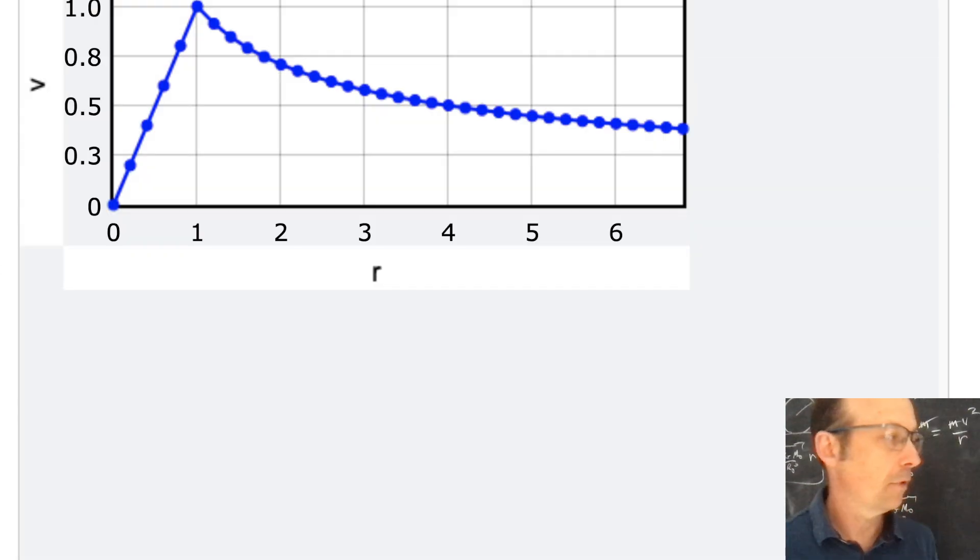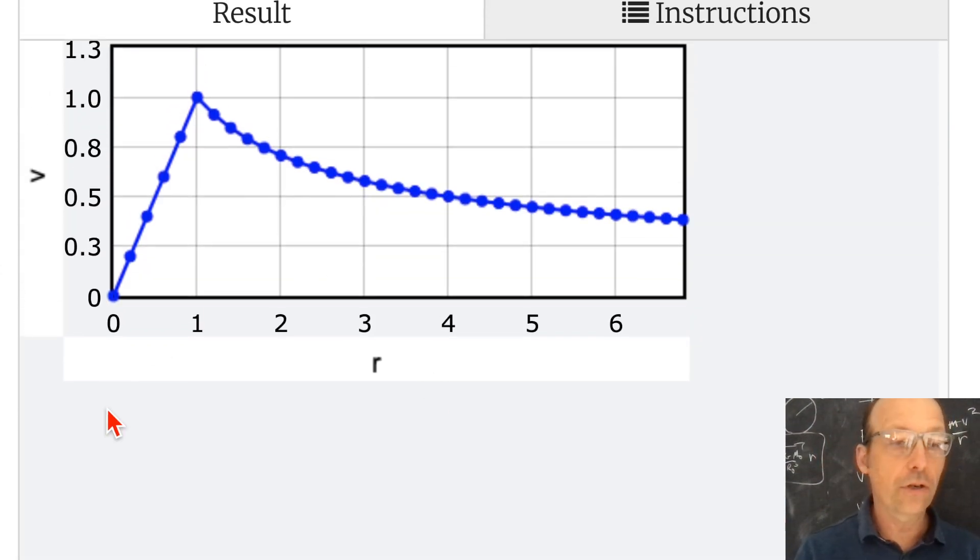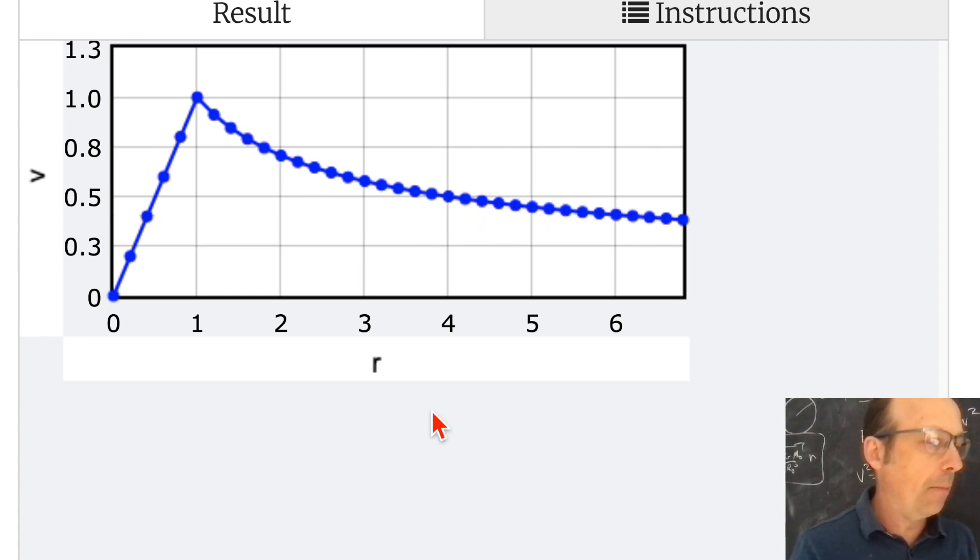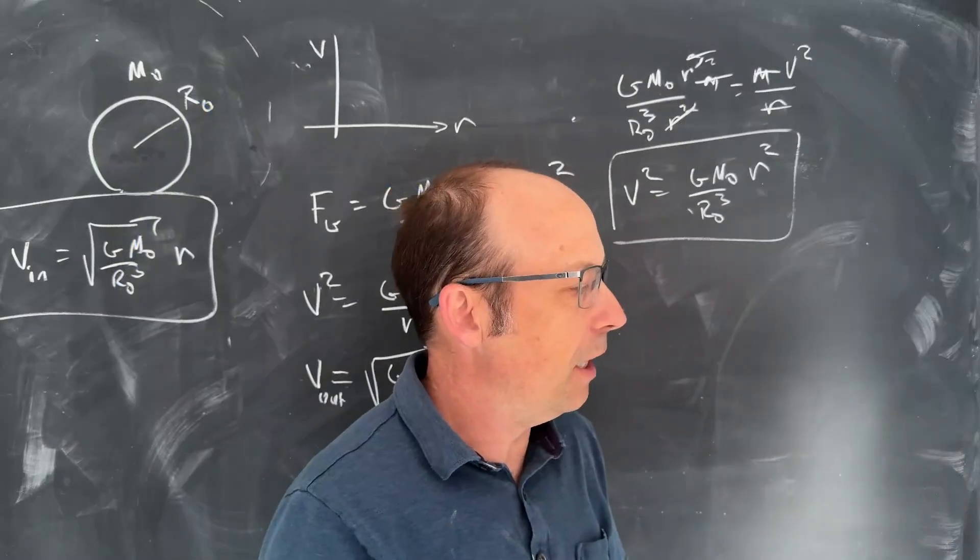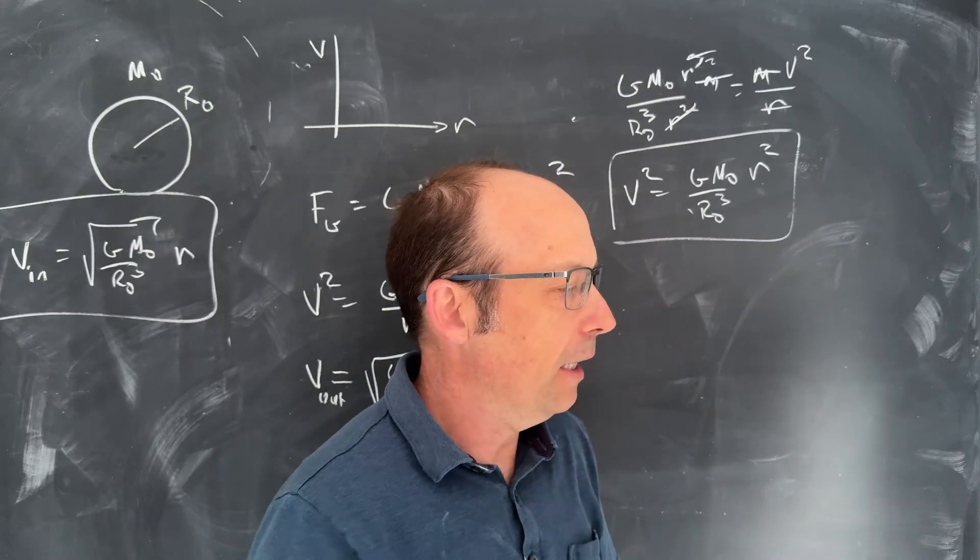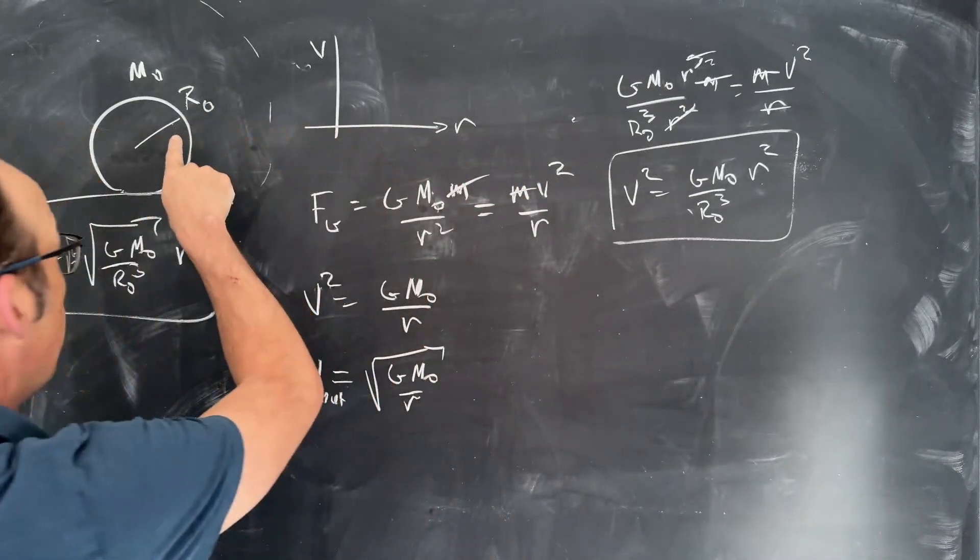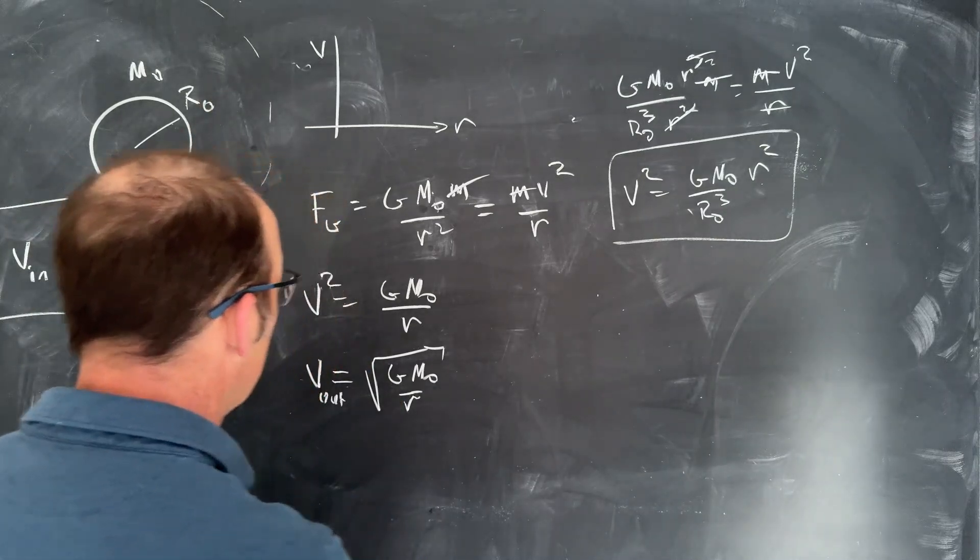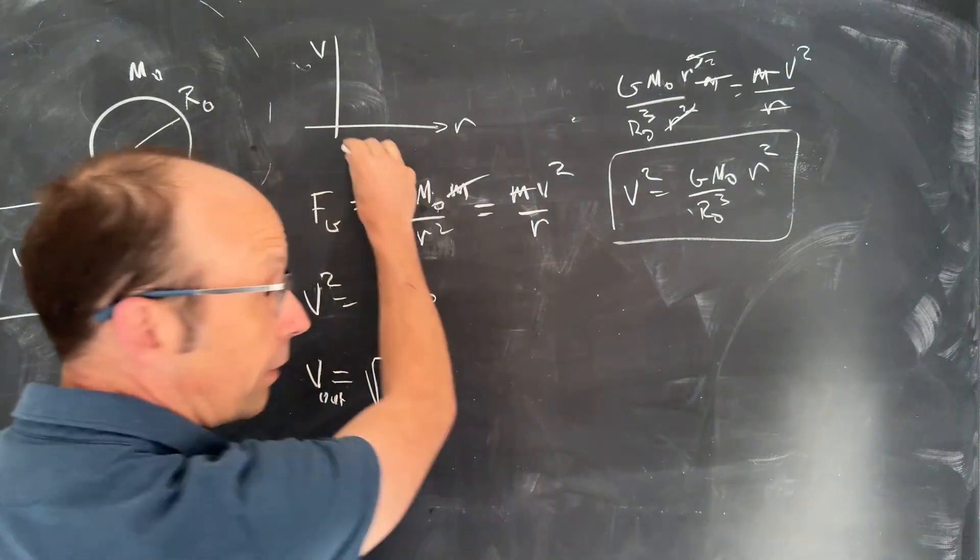Yeah. Okay. So there's our rotation curve. So this is what it should look like. It should decrease right here. Now, what happens if you, and so why do we plot velocity versus time? Why do we care about that? We care because we can get the velocity by using the Doppler shift. We can look at a particular wavelength of light and see how it shifts. But this is what we would expect right here.